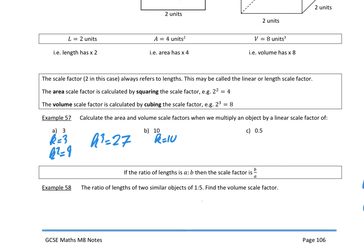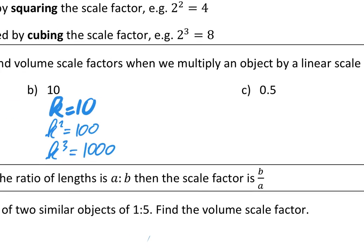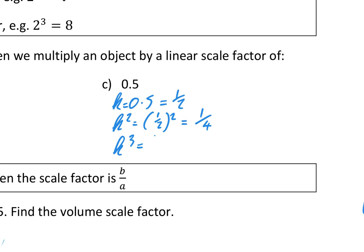For k equal to 0.5, I'll write that as a half. k squared is a half times a half — square the top to get 1, square the bottom to get 4, so k squared is 1/4. k cubed is a half cubed — cube the top to get 1, cube the bottom to get 8, so k cubed is 1/8. So if the scale factor for length is a half, the scale factor for area is a quarter, and the scale factor for volume is one eighth.